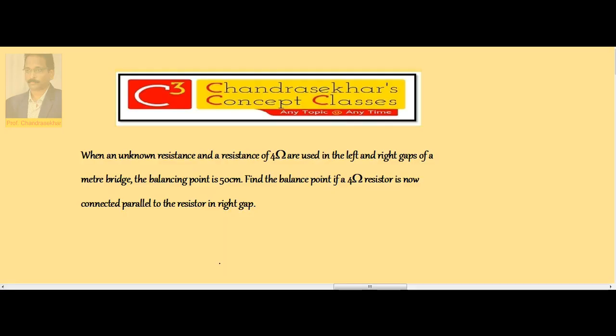If an unknown resistance and a resistance of 4 ohm are used in the left and right gaps of a meter bridge, the balancing point is 50. Find the balance point if a 4 ohm resistor is now connected parallel to the resistor in the right gap.